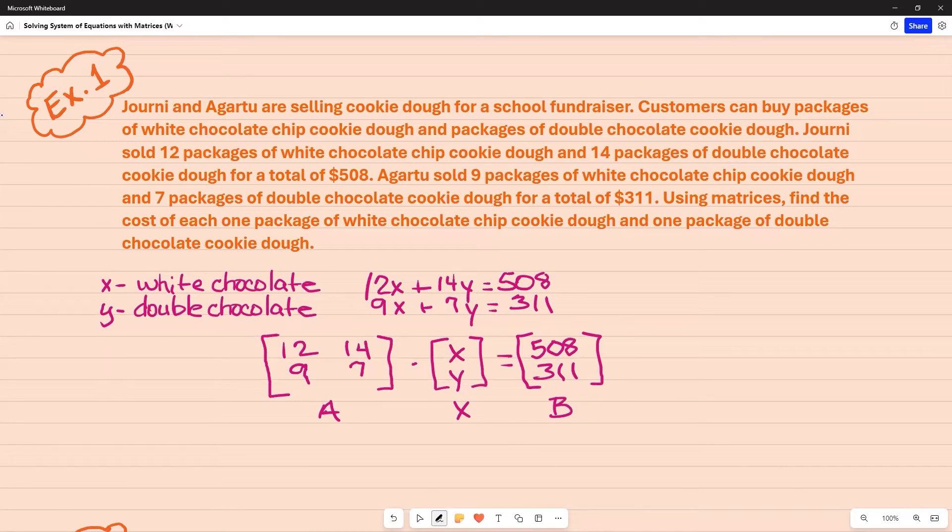What I have to do in order to get X by itself is I have to multiply A by the inverse, and when I do that, it's going to give me my identity matrix, and then that's going to go away, but what I do to one side, I have to do to the other. So on this side, I'm also going to multiply the A inverse times B, but before I can do that, what I need to do is find the determinant.